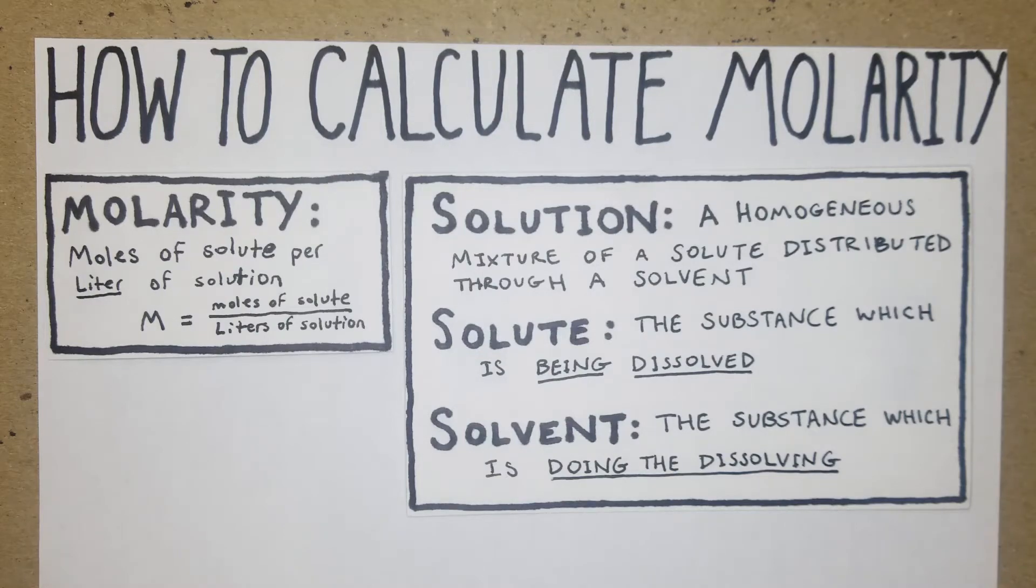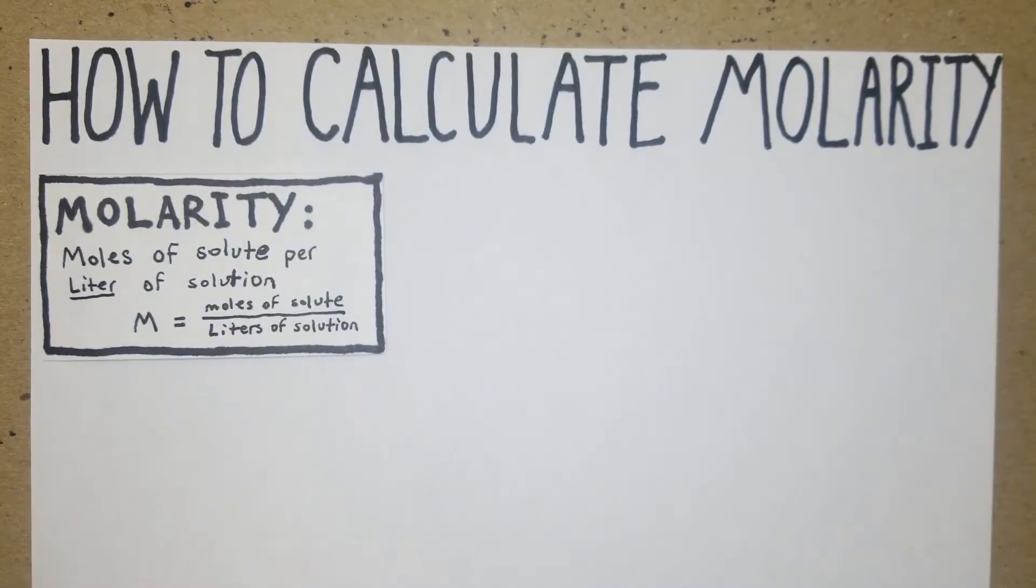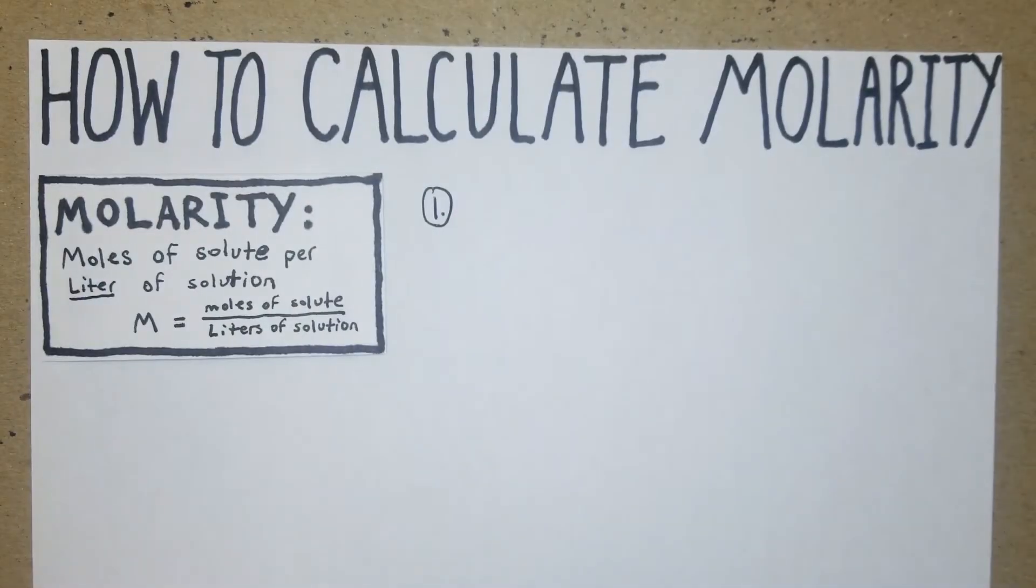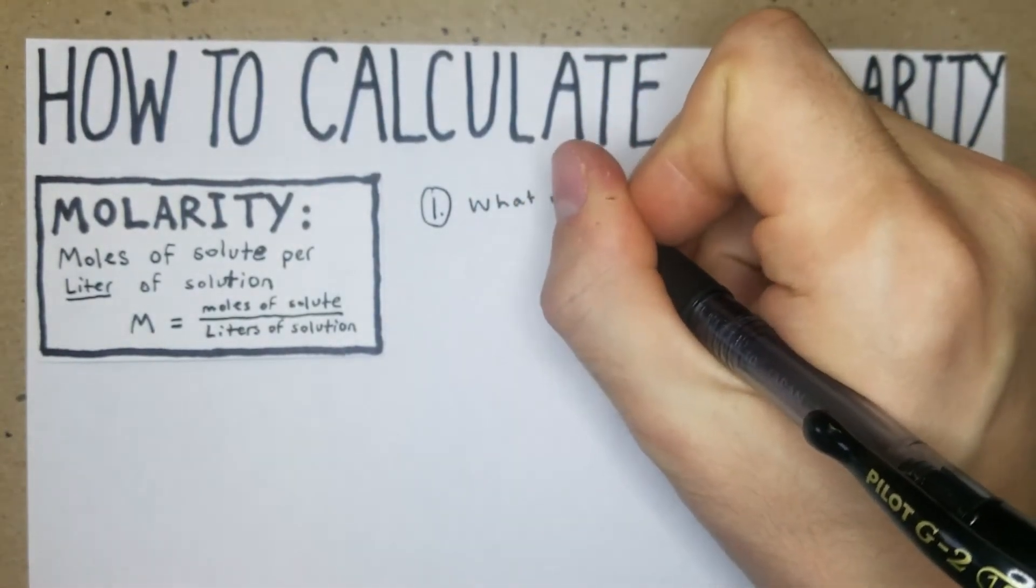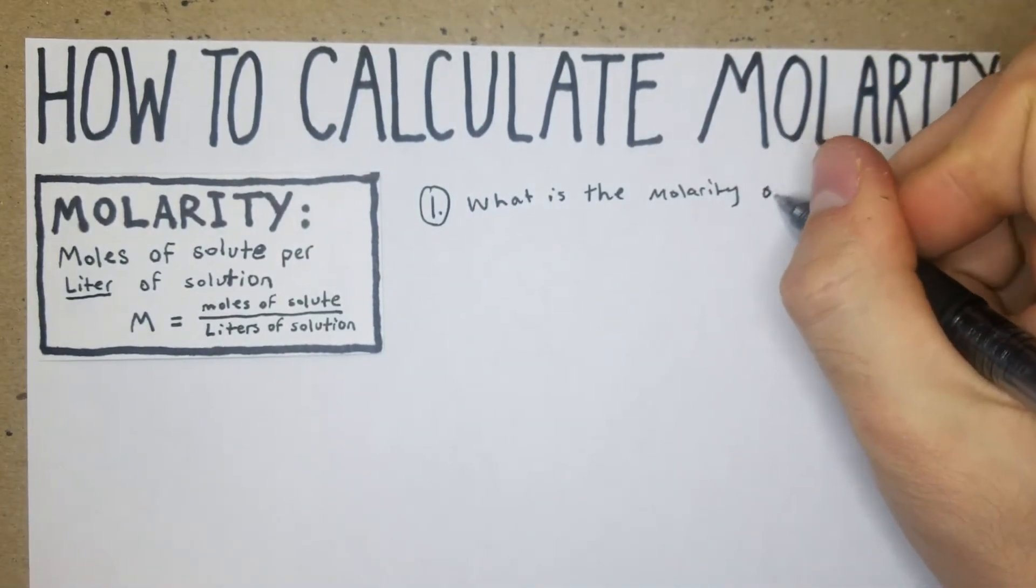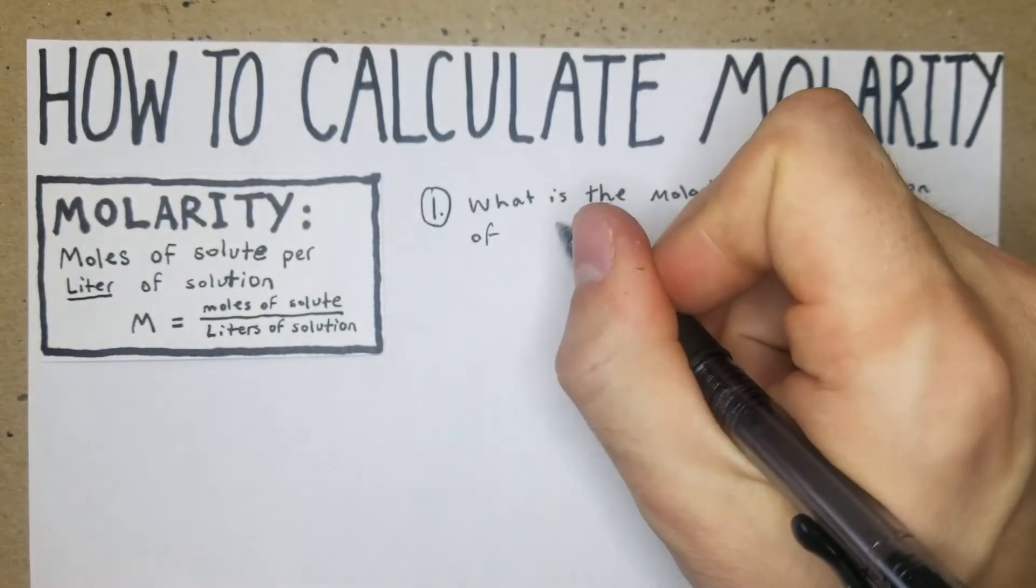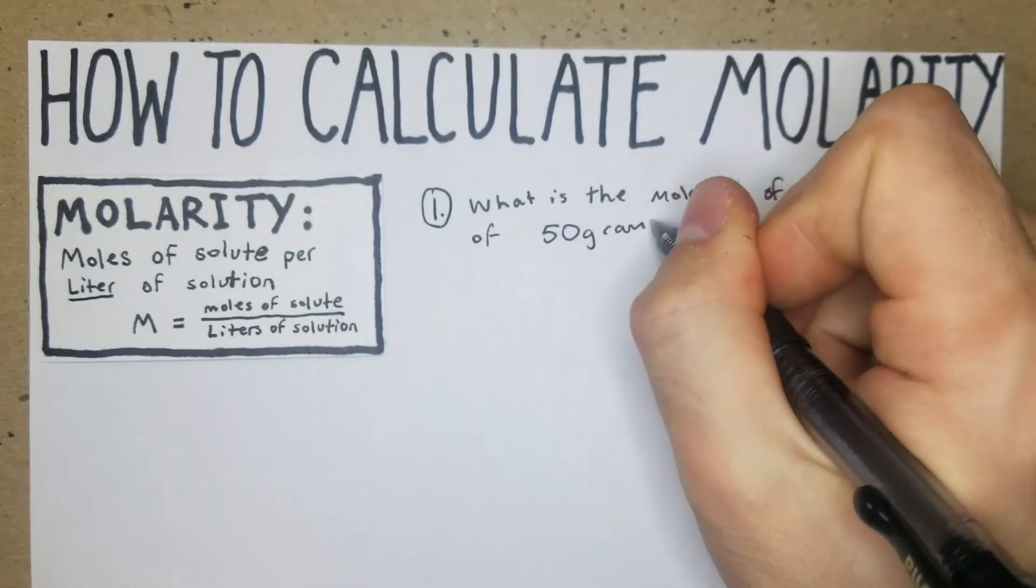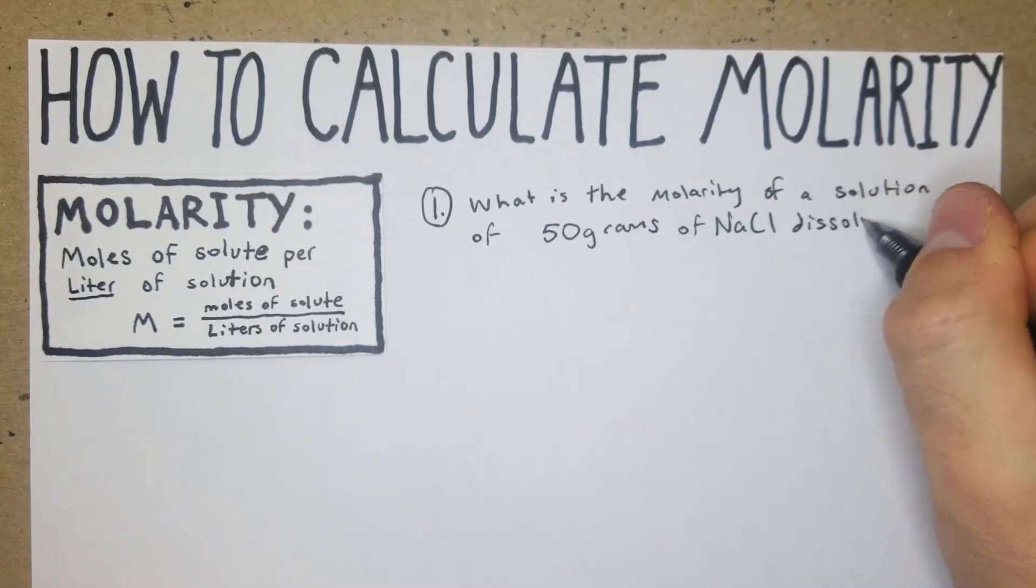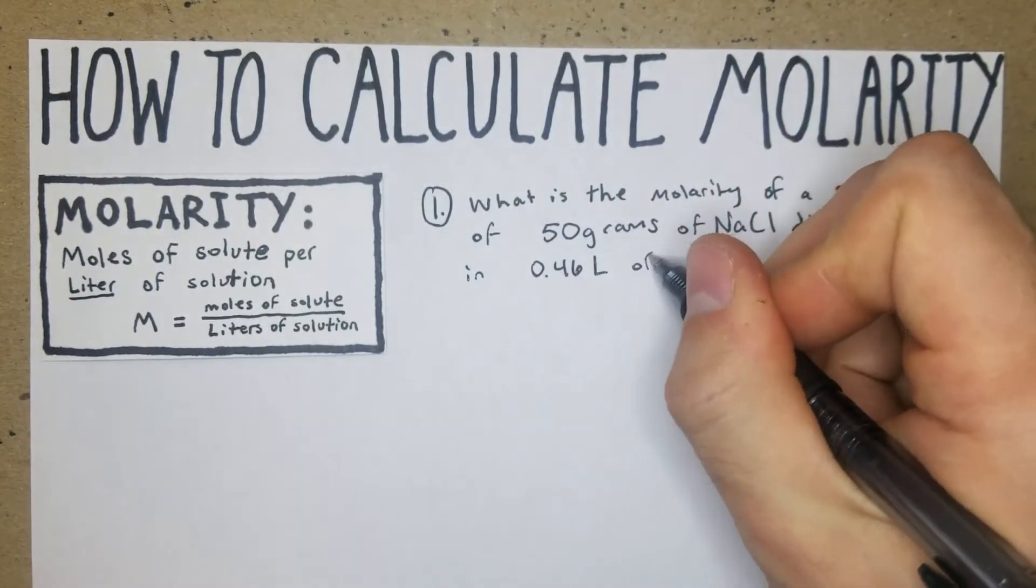From here I just have a few problems that we're going to jump into. So first off, we have probably one of the most common types of problems: What is the molarity of a solution of 50 grams of NaCl dissolved in 0.46 liters of water?